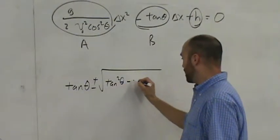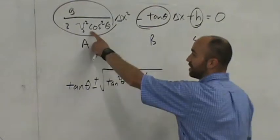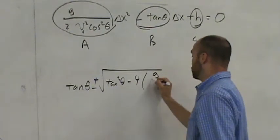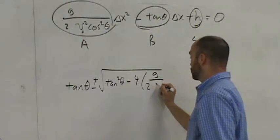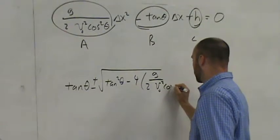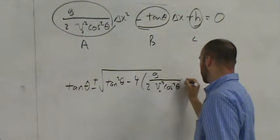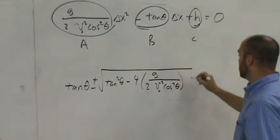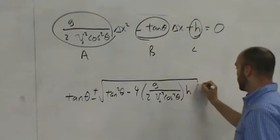Minus 4 times a, that's all this, g over 2, v naught squared, cos squared theta, times c, which is h, positive h.